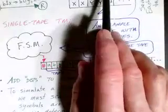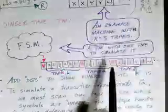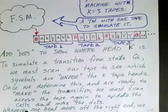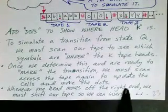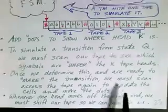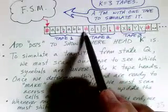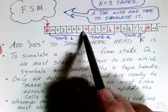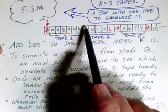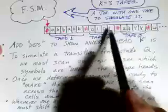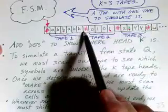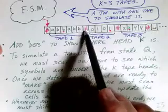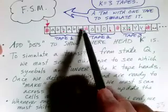One thing we might want to add is that these tapes are infinite with blanks assumed, so when one of these tape heads moves to the right off the end, we need to take care of that. Whenever one tape head moves off the right end, we've got to shift our tape and insert a blank. So even though there are no blanks there, we need to make sure the tape head sees a blank. If the tape head is at the right end and tries to move to the right, then we need to shift tape two and tape three over so that we can insert a new symbol into an open cell right between the B and the pound sign.